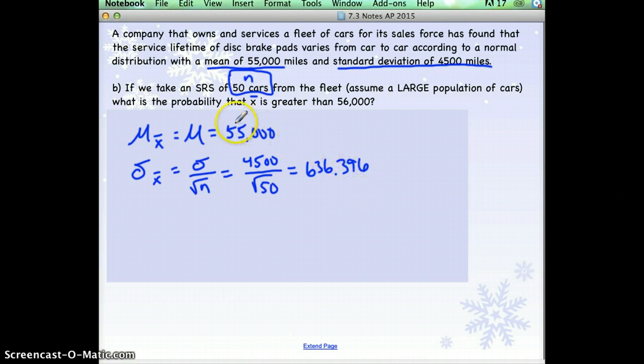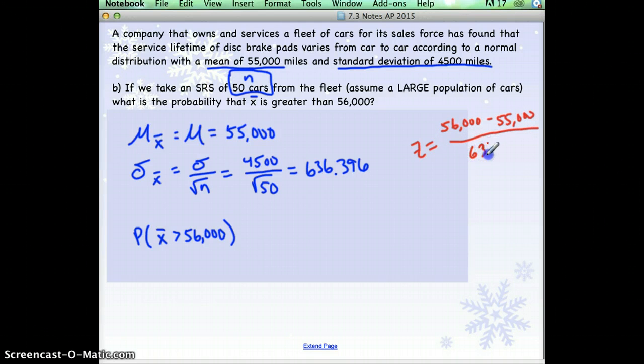Okay, we want to find the probability that x bar is greater than 56,000. All right, we need to find a z-score. So let's do some z-score work. So we take 56,000 minus our mean of 55,000,